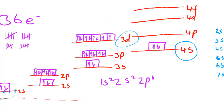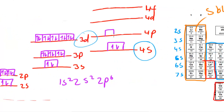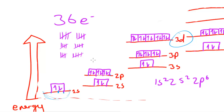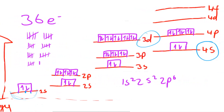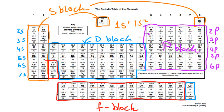After 3d, we move on to the 4p orbital, which is at a higher energy level. Filling up 4p one at a time — one, two, three — then filling in the opposite spins — and this gives us all 36 electrons. This is the electronic structure of Krypton.